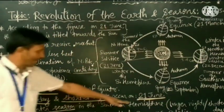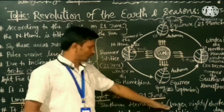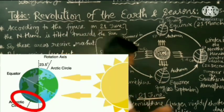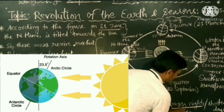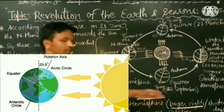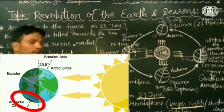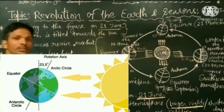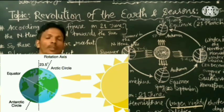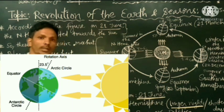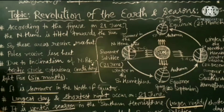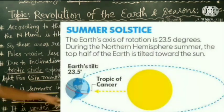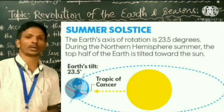In the southern hemisphere, nights are longer and days are shorter. Now, this position of the earth is also known as the summer solstice.